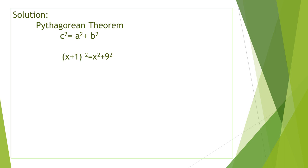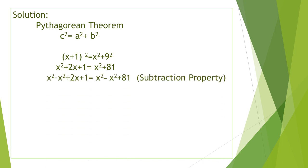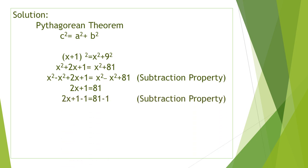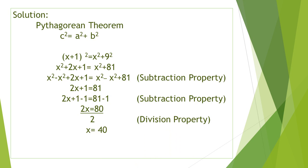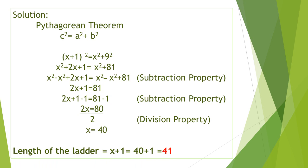x plus 1 squared equals x squared plus 2x plus 1, so the equation becomes x squared plus 2x plus 1 equals x squared plus 81. Using the subtraction property to eliminate x squared from both sides, it becomes 2x plus 1 equals 81, then 2x equals 80. Dividing both sides by 2, x equals 40. So the length of the ladder, which is x plus 1, equals 40 plus 1, which is 41 feet.